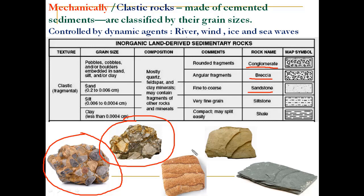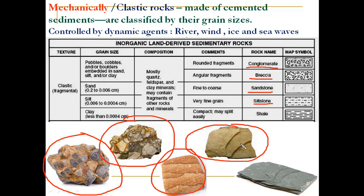Sandstone is fine or coarse-grained, with the primary mineral present being quartz. Siltstone is a very fine-grained sedimentary rock. Followed by shale — shale is compacted, may be split easily, and is mainly formed due to the bonding of clay.